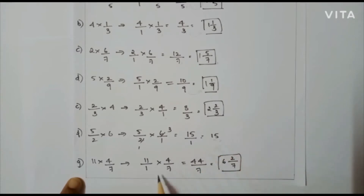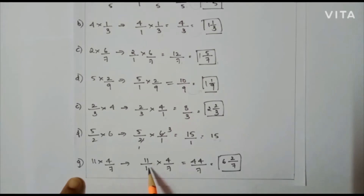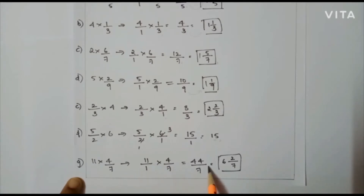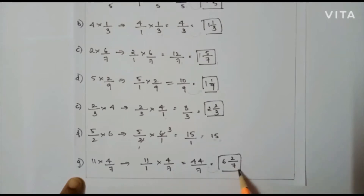The next problem: 11 × 4/7, that is 11/1 × 4/7. Here I can't cancel. So 11 × 4 = 44, and 1 × 7 = 7. So 44/7 is the answer. If I convert this to a mixed fraction I will get 6 and 2/7.